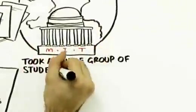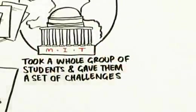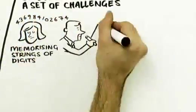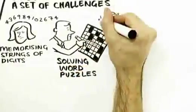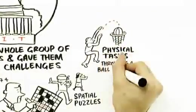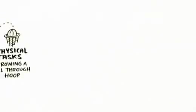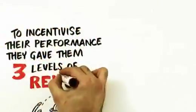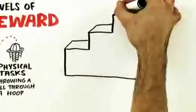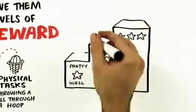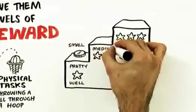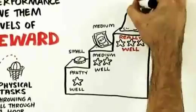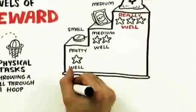Here's what they did. They took a whole group of students and they gave them a set of challenges. Things like memorizing strings of digits, solving word puzzles, other kinds of spatial puzzles, even physical tasks like throwing a ball through a hoop. They gave them these challenges and they said to incentivize their performance, they gave them three levels of rewards. If you did pretty well, you got a small monetary reward. If you did medium well, you got a medium monetary reward. And if you did really well, if you were one of the top performers, you got a large cash prize.